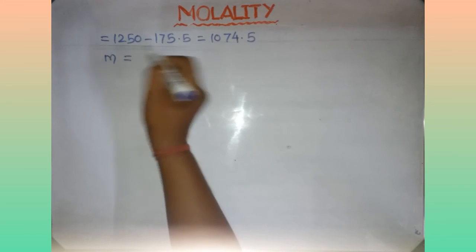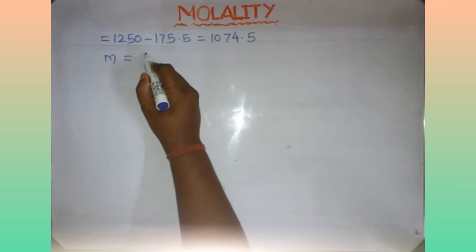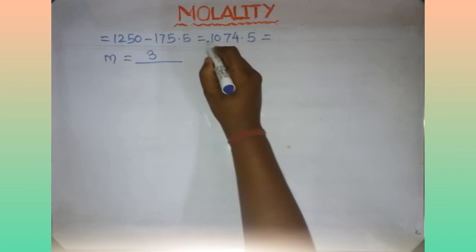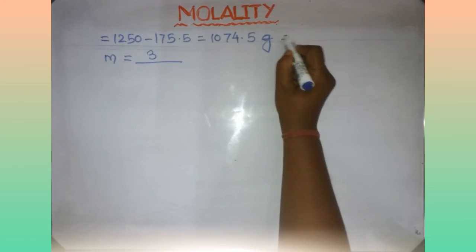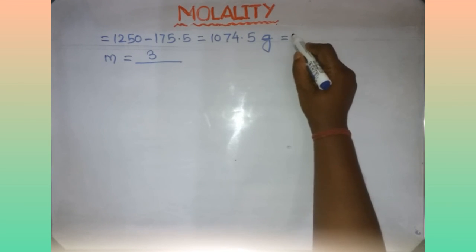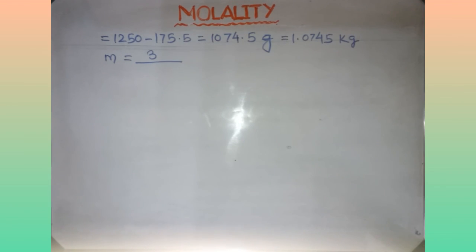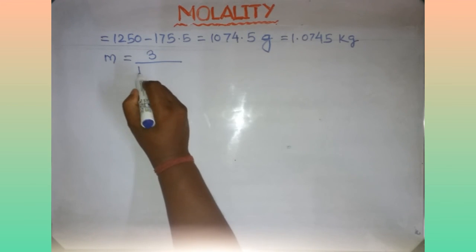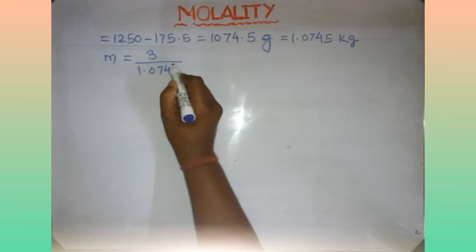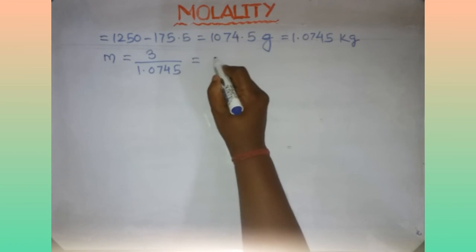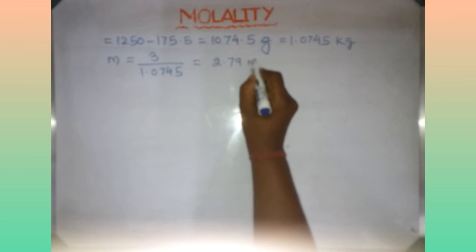Coming to our target: M equals number of moles of solute upon mass of solvent in kg. Number of moles of solute is 3. Mass of solvent is 1074.5 grams, converting to kg gives 1.0745 kg. Therefore molality equals 3 divided by 1.0745, which equals 2.7 m. This is the answer.